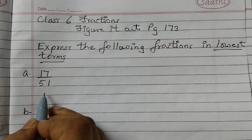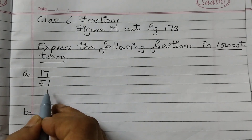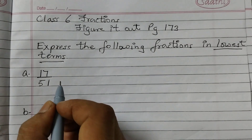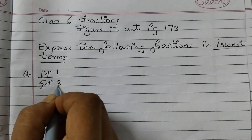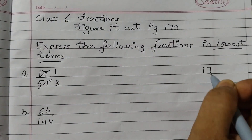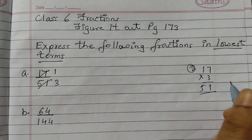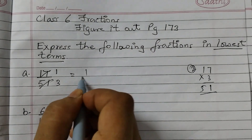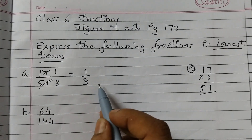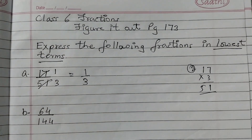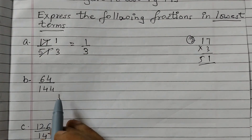The first one is 17 upon 51. Since 51 is divisible by 17, we just do the cancellation: 17 ones are 17, and 17 threes are 51. You can check: 17 into 3 — 7 threes are 21, 1 three is 3, that's 51. So we get 1 over 3. Now 1 upon 3 is in lowest form — there is no common factor except 1.